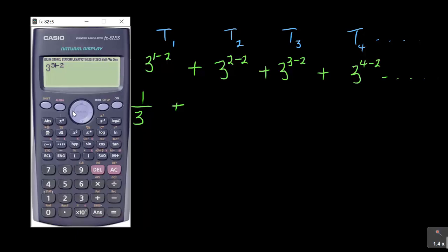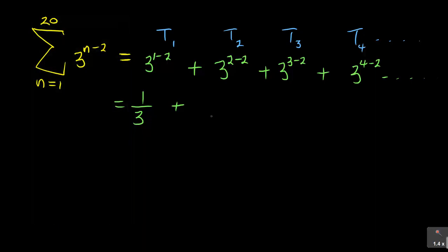The other one is 4 minus 2. So what I have here, I have got 1 plus the other one was 3, the other one was 9 and so on. So these are what I'm having as my T1, my T2, my T3, my T4.